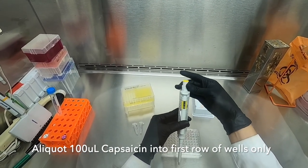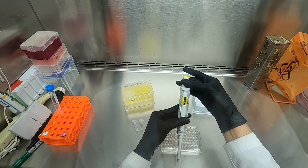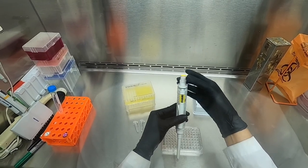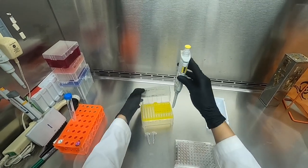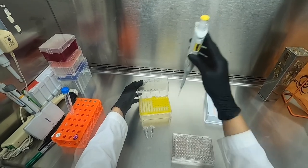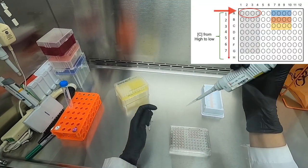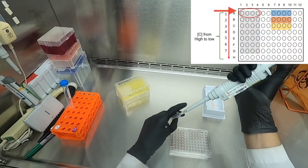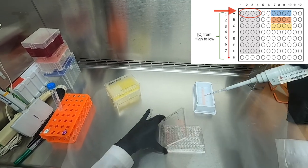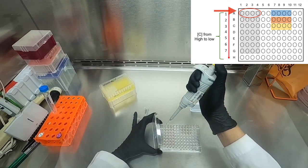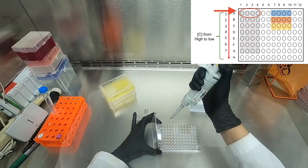If we refer back to the manual, we will see that our stock concentration of capsaicin is at a concentration of 400 micromolar. This means that by dividing it in half in these plates, our highest concentration will begin at 200 micromolar and our lowest concentration will be 3.125.